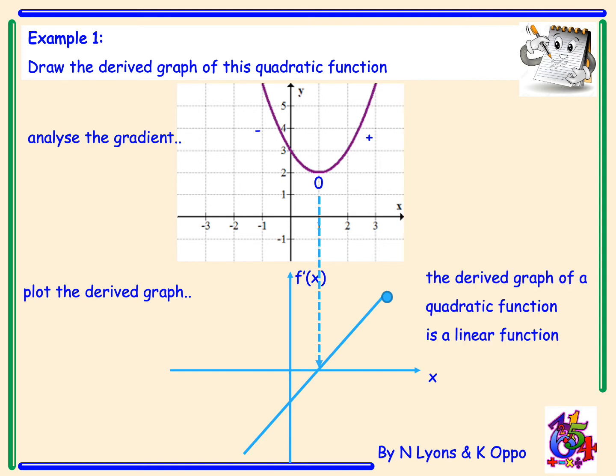In this example, the derived graph of a quadratic function is a linear function. That makes sense — when you differentiate a quadratic, you get a linear function, so it's no surprise that the derived graph of a quadratic is going to be linear.